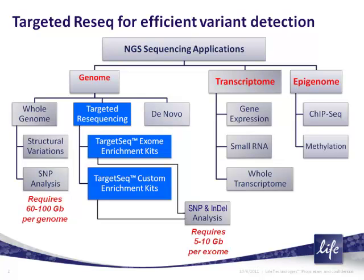We have a diagram showing basic workflows used for analyzing genomic DNA. Toward the right is transcriptome sequencing — RNA sequencing — and on the far right are specific applications associated with epigenetics, particularly ChIP-seq and methylation. Today, the subject will be this portion of genomic sequencing commonly referred to as targeted resequencing.